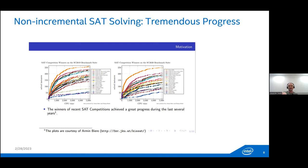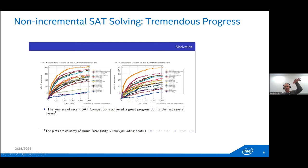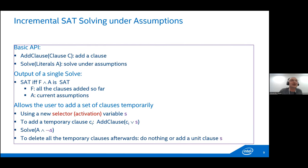There has been tremendous progress in non-incremental SAT solving. Two plots show progress on SAT competition benchmark suites from 2019 and 2020. Each line corresponds to a SAT competition winner from 2002 to 2020 — the 2020 winner Kissat solves many more benchmarks than older solvers. However, many applications require incremental SAT solving under assumptions, not non-incremental solving.